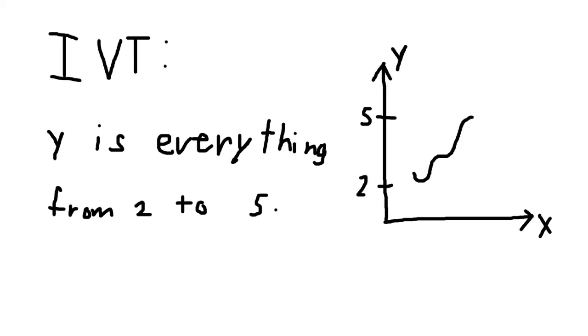The intermediate value theorem pretty much says that if I draw any continuous curve, point out where the biggest and smallest y values are, the graph must contain all the y values in between. If that wasn't true, limbo would be a really easy game. Just walk through the missing part of the stick.